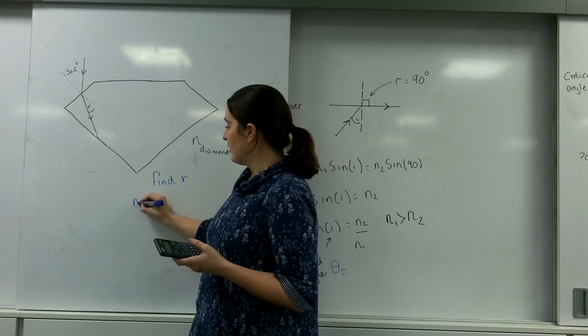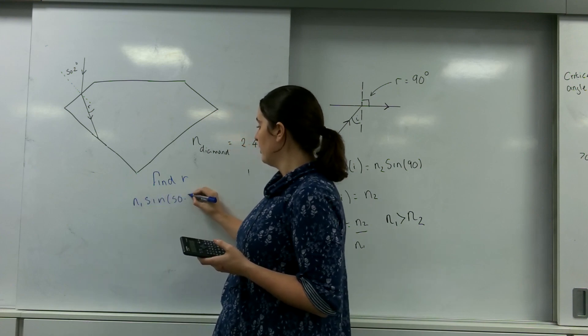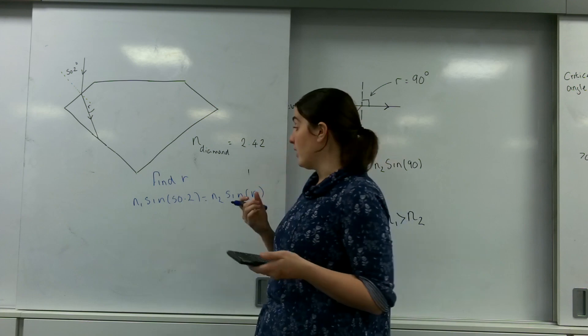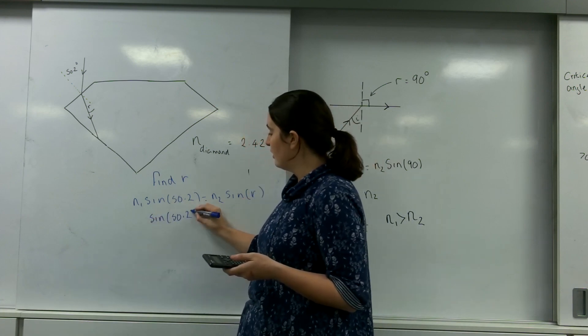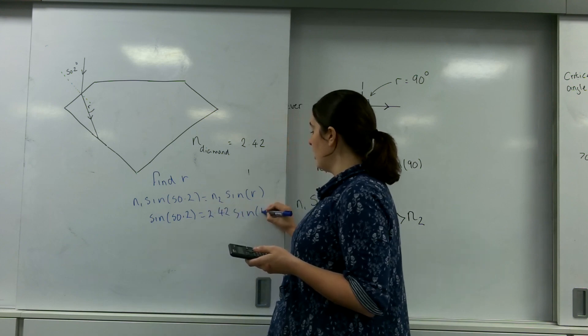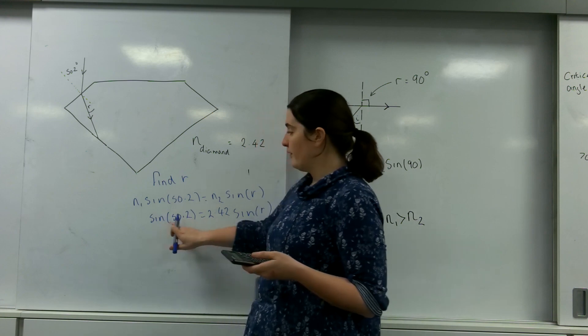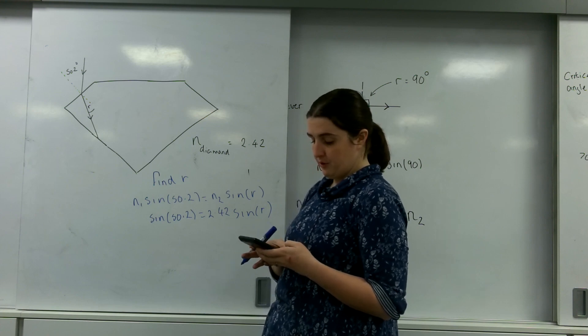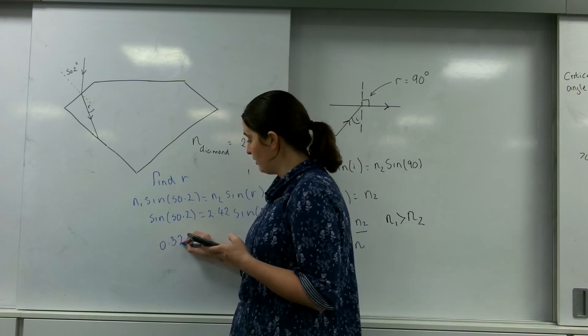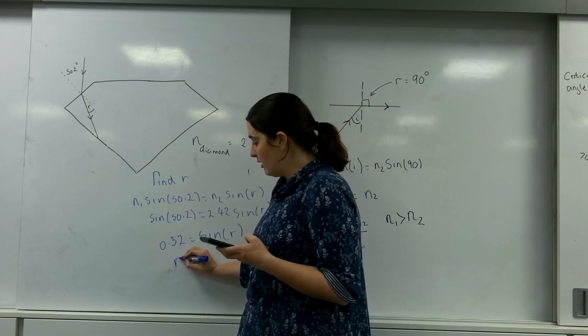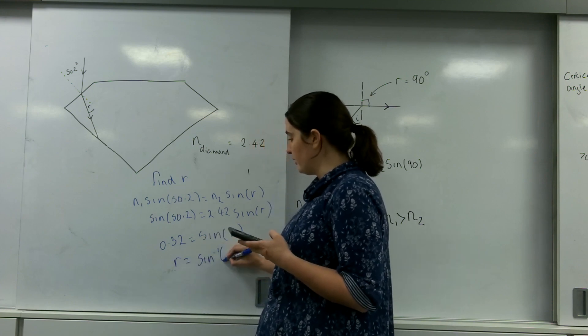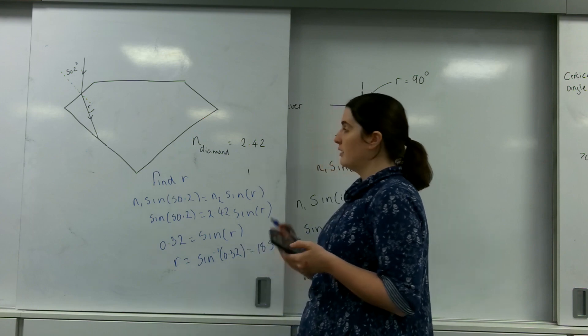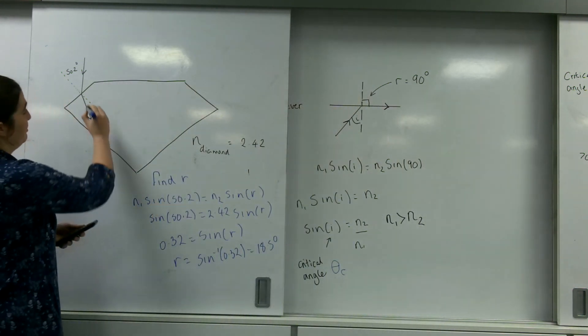I'm going to use Snell's law for this. So N1 sine 50.2 equals N2 sine R. N1 is air, so that is 1. So I have sine 50.2 equals 2.42 sine R. Sine 50.2 divided by 2.42, I get 0.32 is sine R, and R equals sine to the minus 1 of 0.32, which is 18.5 degrees.